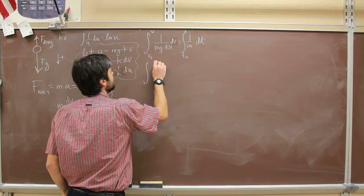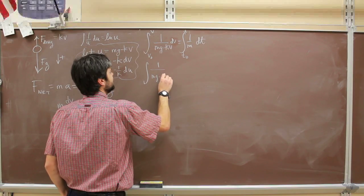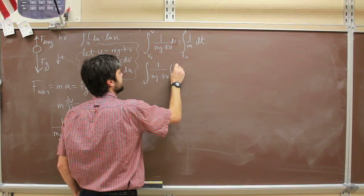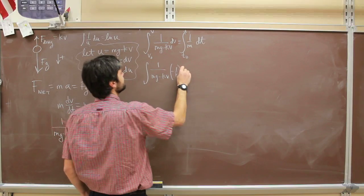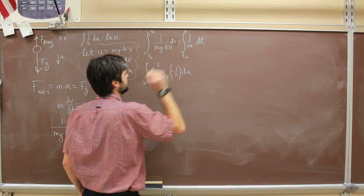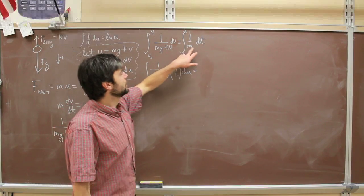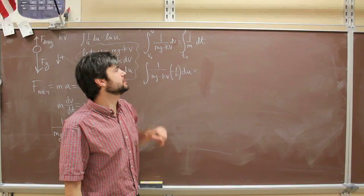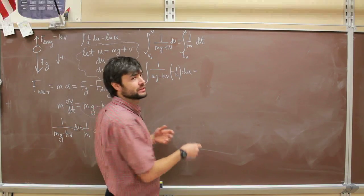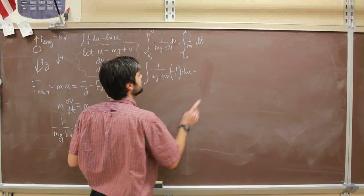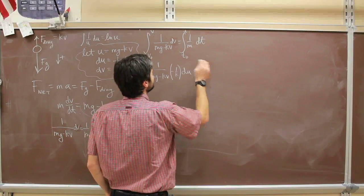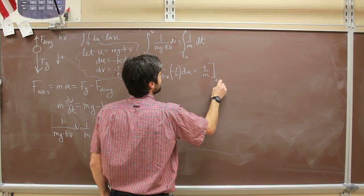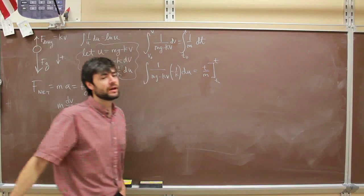So that becomes 1 over mg minus kv. Then I'm subbing in, so that becomes minus 1 over k, and that's du is equal to—what's the integral of 1 over m dt? m is a constant that can be pulled out, and so it just becomes the integral of dt, and that's t. So that simply becomes t over m, and that's from initial time to final time.